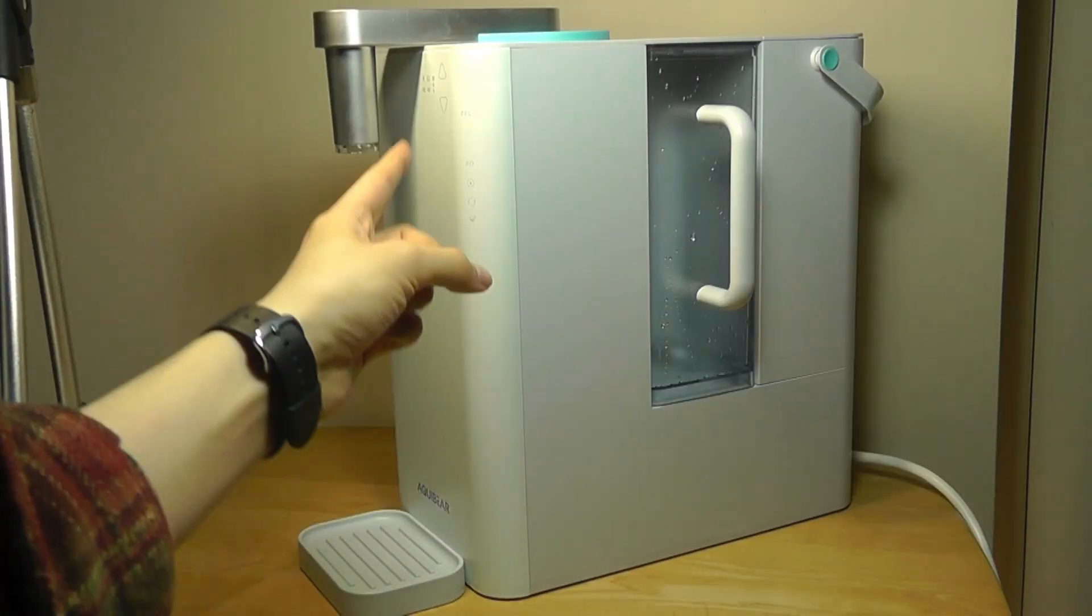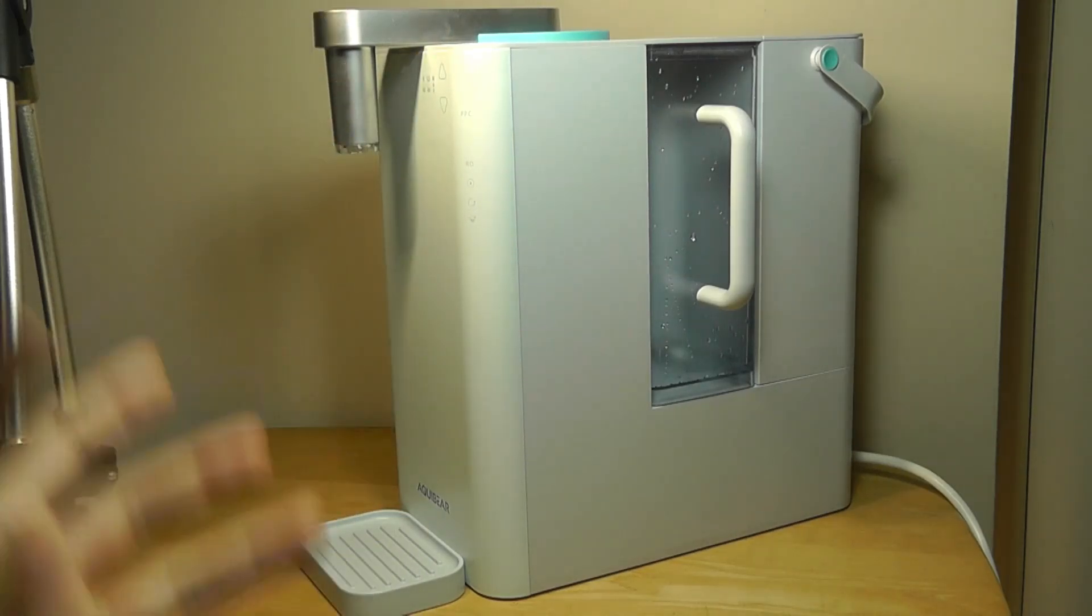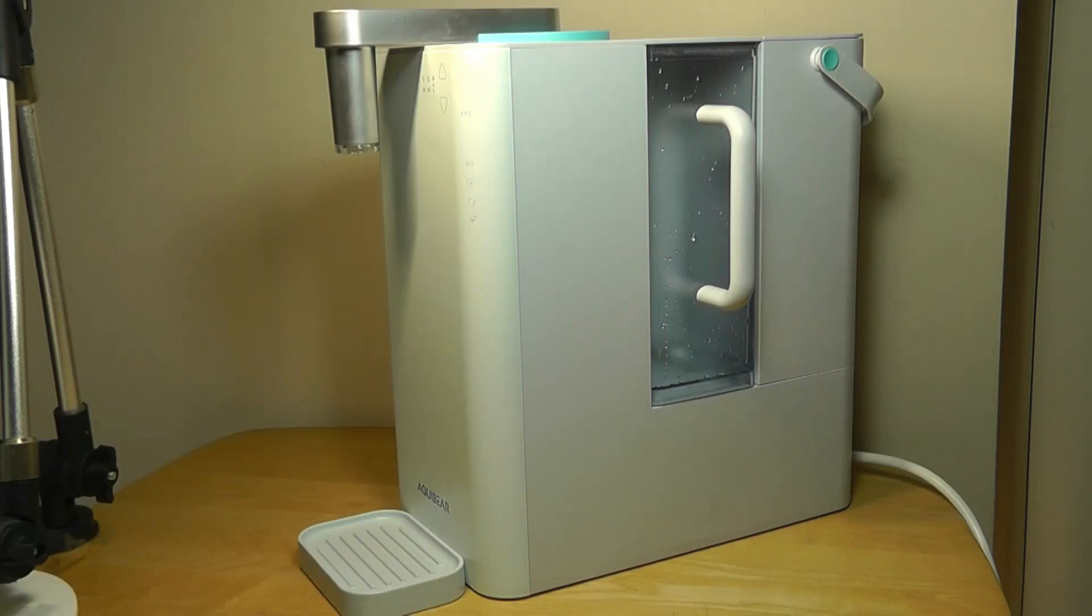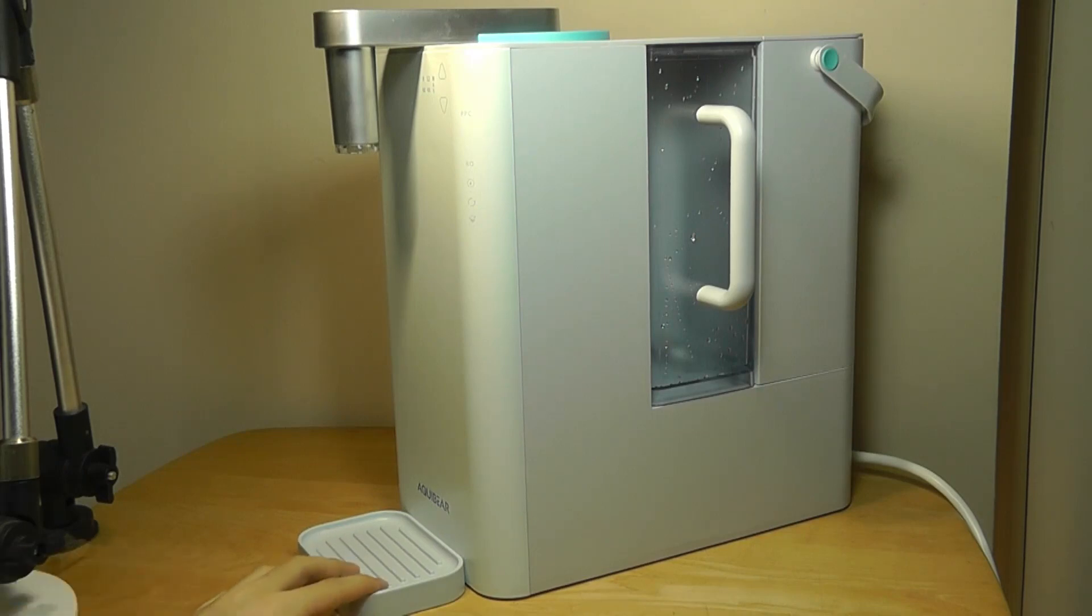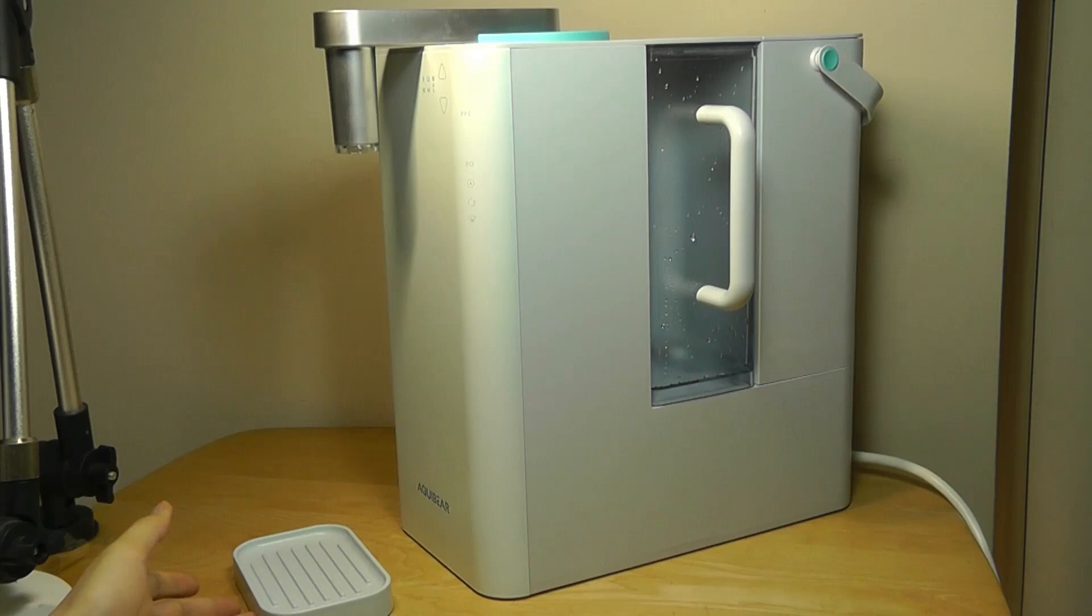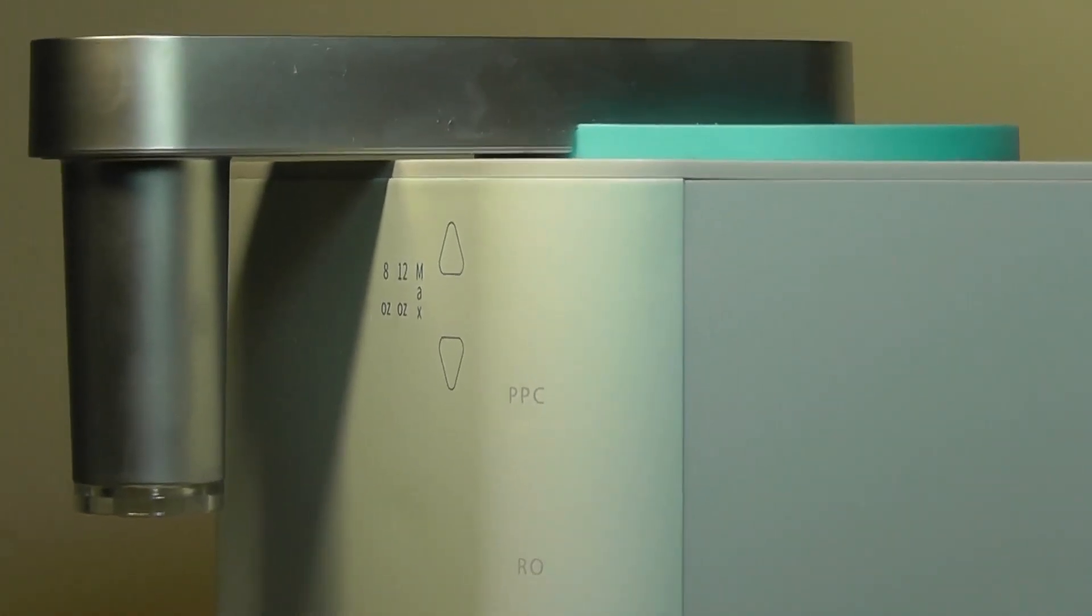And then on the side here we do have some touch controls that are backlit when the unit is turned on, allowing you to change settings like how much water you want to dispense, as well as if you want hot water versus cold water, and also if the filter is working correctly. Down below here there's also a catch which prevents some water from dripping. This is a part that's also magnetic and just kind of attaches onto the base. It also has some metallic accents on the arm here, and the arm in fact even pivots.